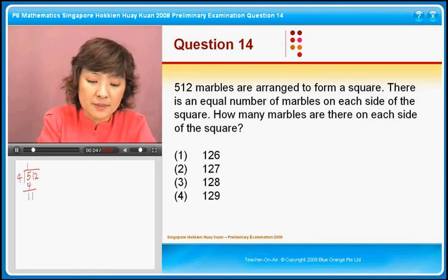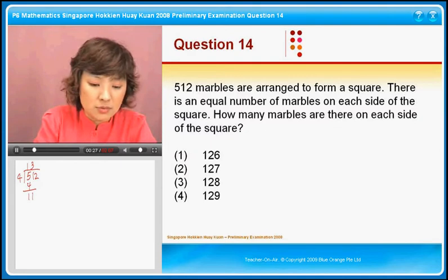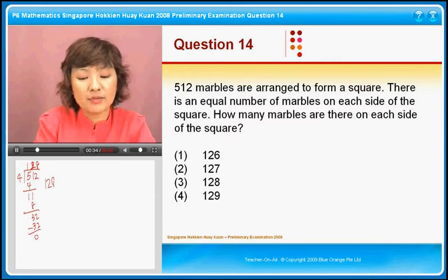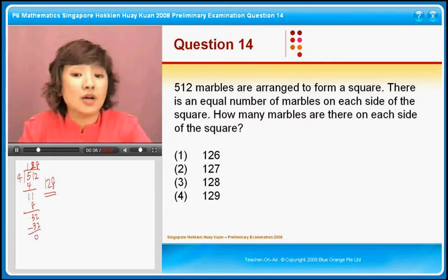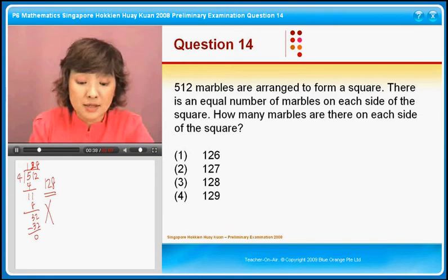And then you will end up with, sorry, this is a 2, so it's 8. You end up with 128 on each side. Now, I must tell you that this is wrong.